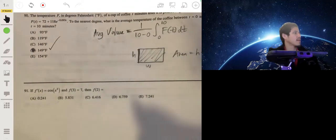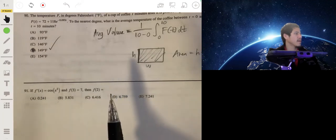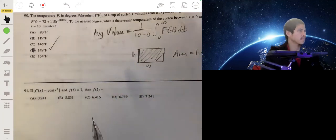If f'(x) = cos(x²) and f(3) = 7, then f(2) equals... There's a couple ways to do this.